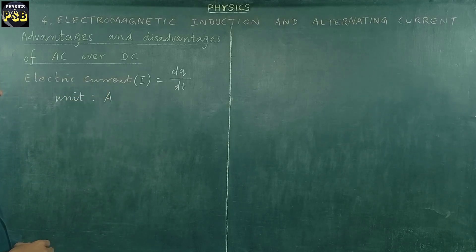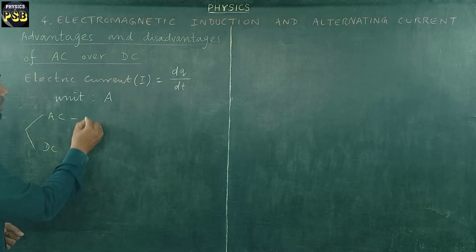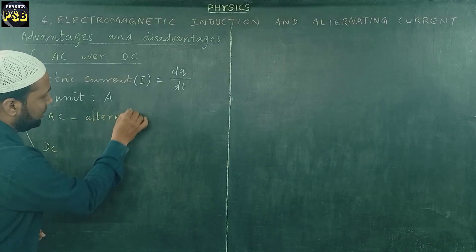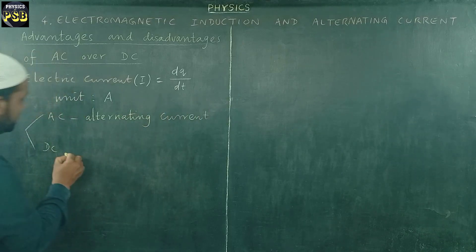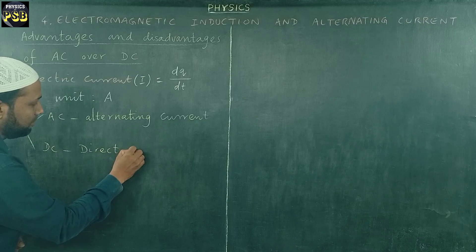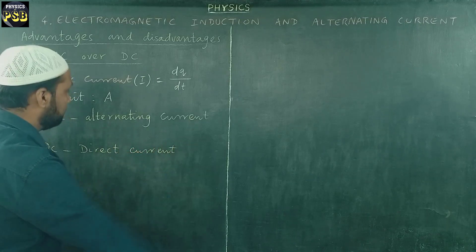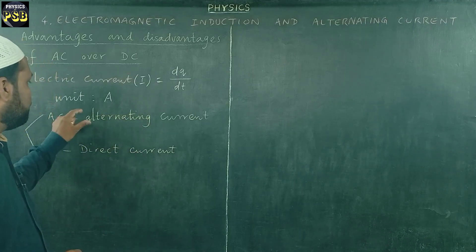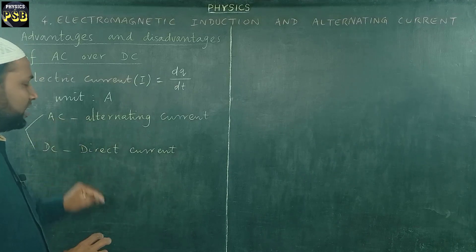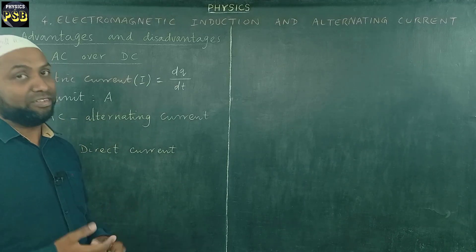It is broadly classified into two as AC and DC. Here AC stands for alternating current and DC stands for direct current. If you look at the name, that itself shows that there is something in AC that alters, that varies.